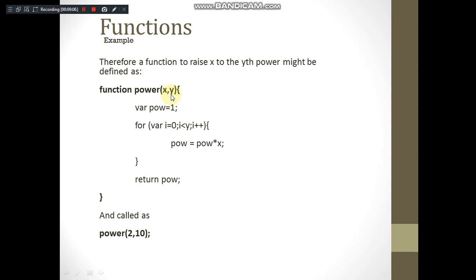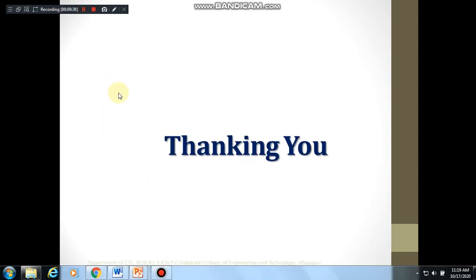This is the body of the function which is just calculating the power of a certain number and returning the value. The way to call this is similar to our C function. This is the way we call: power is the function and 2 comma 10. These 2 is copied into x and 10 is copied into y. This is how we write the functions in JavaScript. We'll see the rest of the part in next class. Thank you.